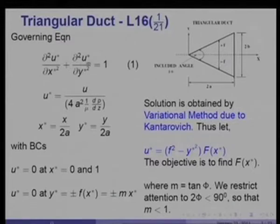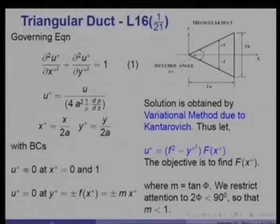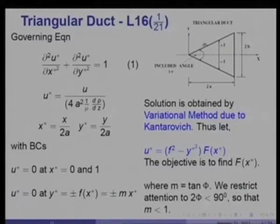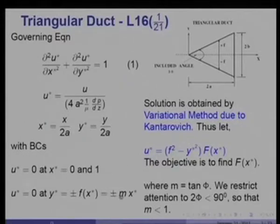This is a Poisson's equation with the right-hand side equal to a constant. The boundary conditions are given at x* = 0 (the apex) and x* = 1 (the base). u* is also equal to 0 where y = ±f(x), and f is a function of x itself. We have a boundary where y is a function of x — in this case a linear one, with m = tan φ, where φ is the half angle.